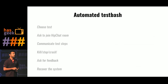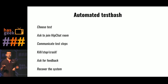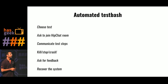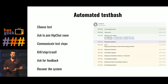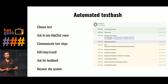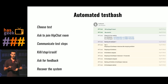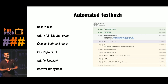The other mode is the automated test bash. We're heavy users of HipChat, which is a well-known chat application like Slack. We integrated Goblin to be a HipChat bot as well. It goes and pings a few participants to join a meeting, communicates the test steps so everyone's on the same page, runs the test, kills something, asks for feedback from the users in the same HipChat room so you have a documented result, then recovers the system and goes and runs other tests.